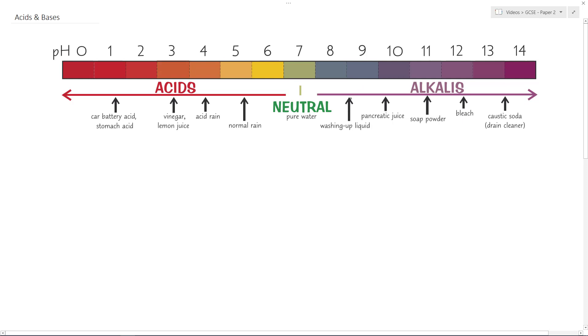The thing about acids and bases is that they are terms used to describe substances. Acids normally have the term acid in the title, like carbonic acid, sulfuric acid, stomach acid, hydrochloric acid, vinegar which is ethanoic acid, citric acid in lemon juice, etc. You can often tell if something is an acid because it will have acid in its name.